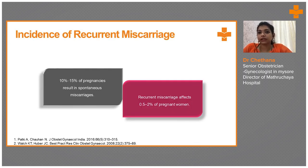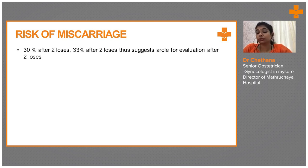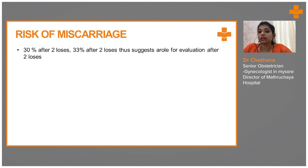Incidence of recurrent pregnancy miscarriages: 10 to 15 percent of pregnancies result in spontaneous miscarriages. In RPL, recurrent miscarriage affects 0.5 to 2 percent of the total pregnant women. The risk of miscarriage is 30 percent after two losses and 33 percent after three losses, which does suggest a role for evaluation after two losses. If a woman undergoes recurrent pregnancy losses of more than two times, we have to do advanced investigations to rule out the cause for RPL.